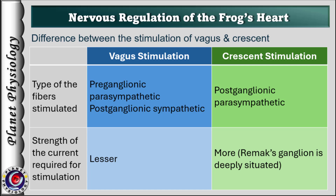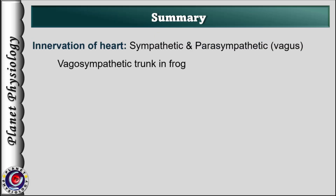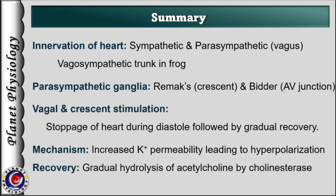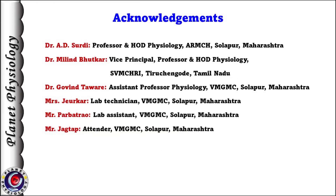Let's wind up this topic by summarizing the important points. Frog's heart is innervated by sympathetic as well as parasympathetic nerves in the form of the vagosympathetic trunk. Parasympathetic ganglia are the Remax ganglia in the crescent and the Budas ganglia at the atrioventricular junction. Stimulation of vagus as well as crescent causes stoppage of heart in diastole followed by gradual recovery, due to increased permeability for potassium ions from the action of acetylcholine on M2 receptors. Gradual recovery is because of gradual hydrolysis of acetylcholine by the enzyme cholinesterase.